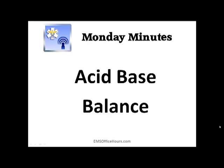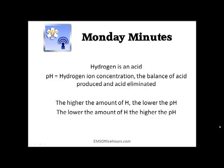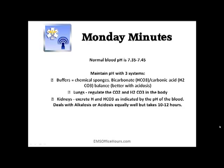Acid-base balance — it's hydrogen, and it's an acid of course. We talk about pH, and that's the hydrogen ion concentration, which is the balance of the acid produced and the acid that gets eliminated. The higher the amount of hydrogen, the lower your pH is going to be, and the lower the amount of hydrogen, the higher the pH is going to be. The normal pH for us is 7.35 to 7.45, and we maintain that hydrogen ion concentration using three different systems in the body.